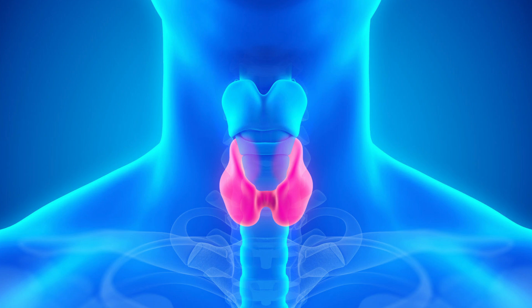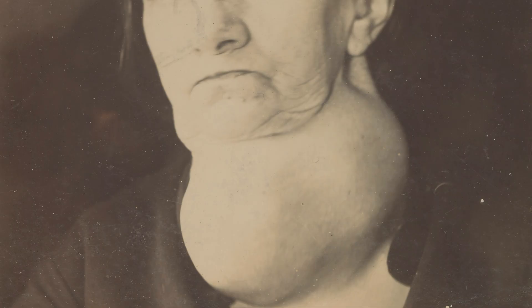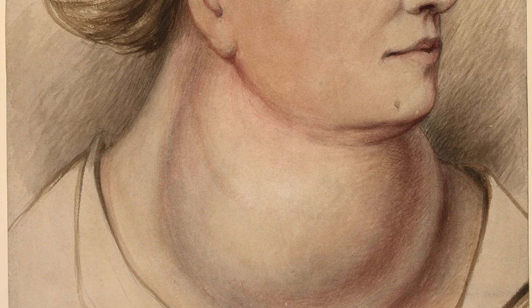The butterfly-shaped thyroid gland is located at the base of your neck. An enlarging thyroid gland is a goiter. A clear lump or swelling at the base of your neck may be a sign and might feel unpleasant or tender, but are mostly painless.